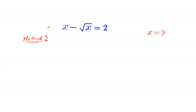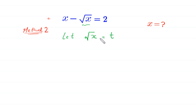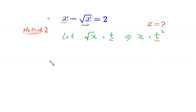Now let us solve this equation by method 2. In this method, we suppose that the square root of x is equal to t. If we square both sides of this equation, this implies that x is equal to t squared. So we replace x with t squared and root x with t. This equation will become t squared minus t is equal to 2.